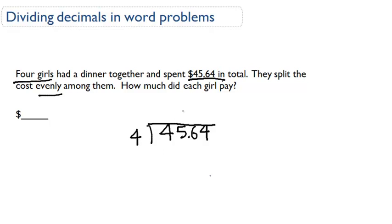Okay, let's go ahead and do this. So four goes into four one time, okay, and we're left with $5.64. Four goes into five once, and we're left with $1.64.